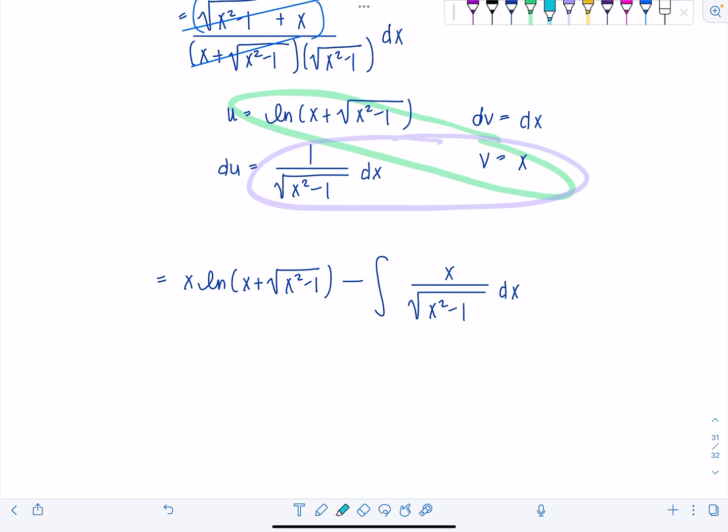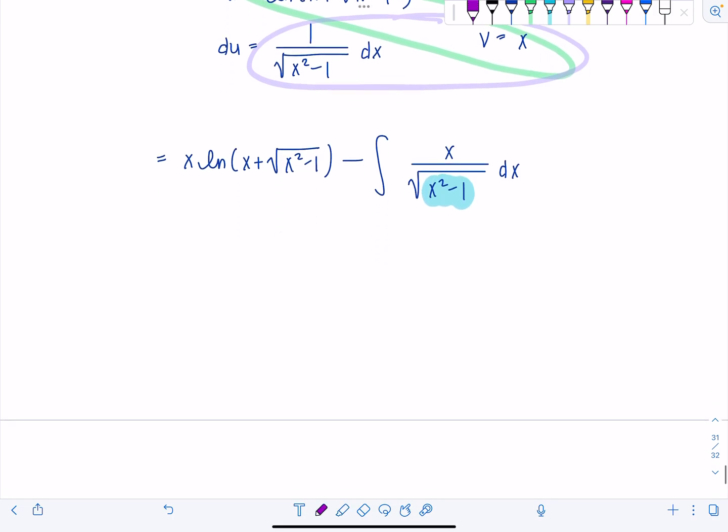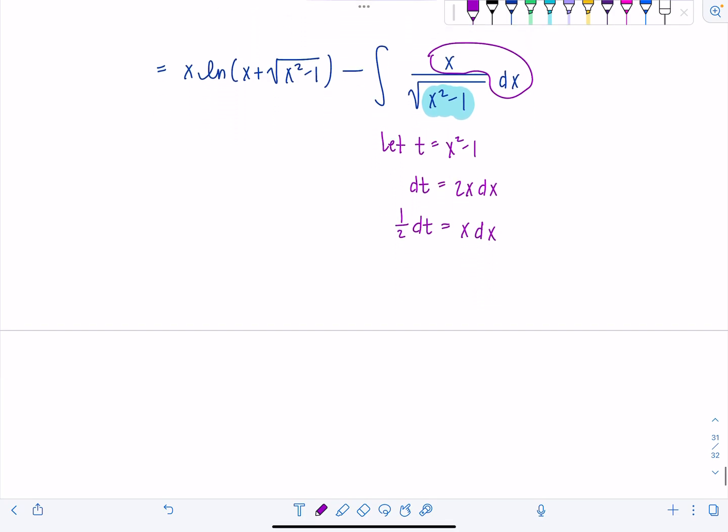this is the least of our worries. I'm just going to make a substitution. I already used up u. So let's go ahead and say let t equal x squared minus 1. So then dt is 2x dx. That's not quite what I have. Divide by 2. So 1 half dt equals x dx. Lovely.